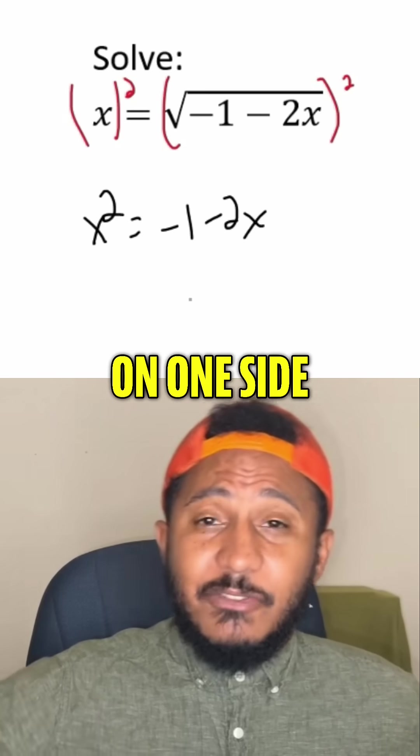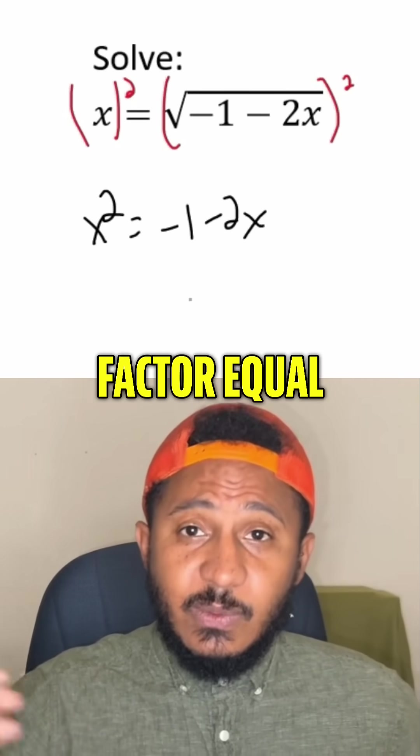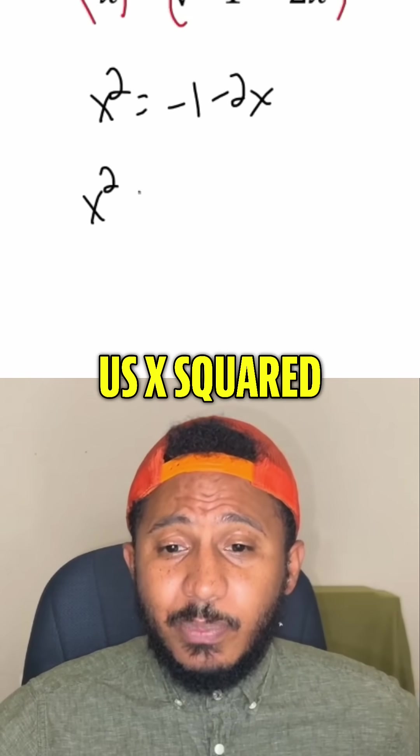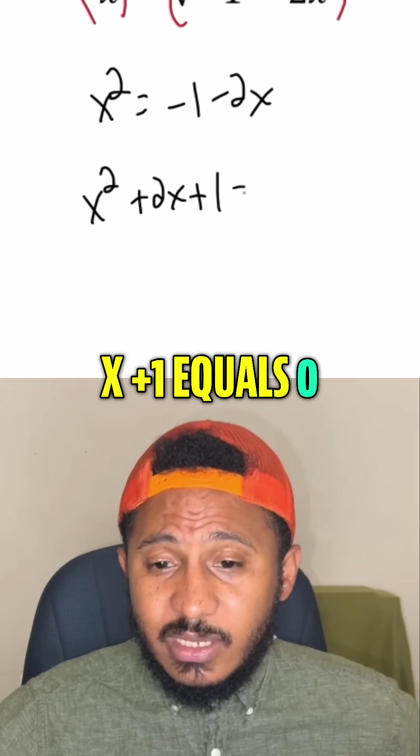And now it's a quadratic. So we get 0 on one side, factor the other side, set each factor equal to 0. So that would give us x squared plus 2x plus 1 equals 0.